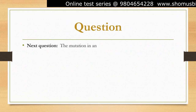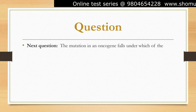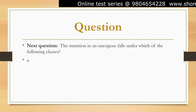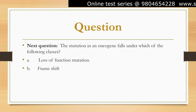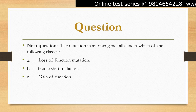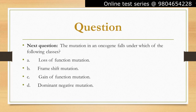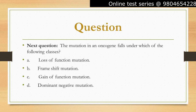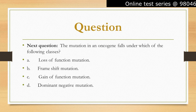The mutation in an oncogene falls under which of the following classes? The mutation in an oncogene falls under the class of gain-of-function mutations. Therefore, the correct answer is option C.